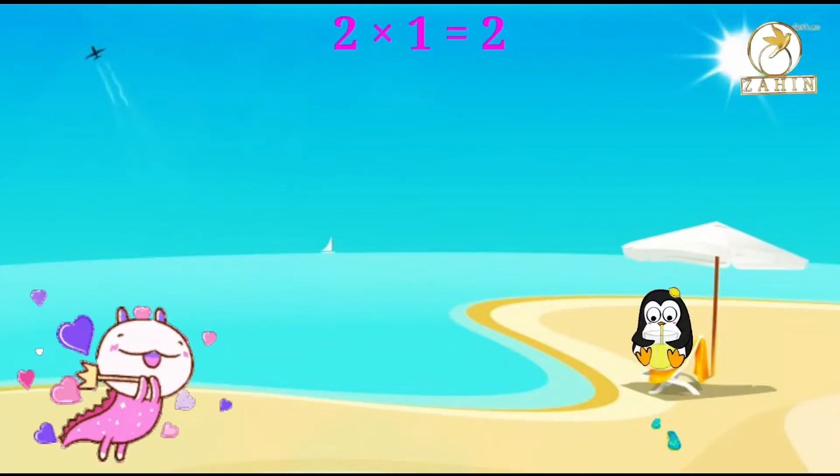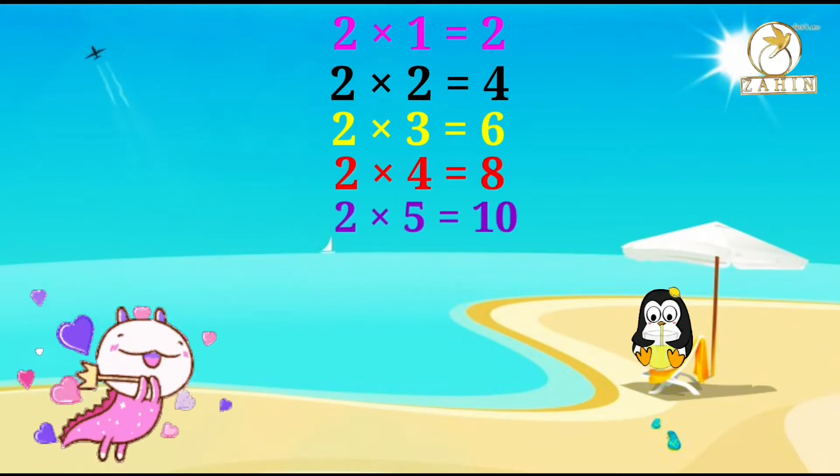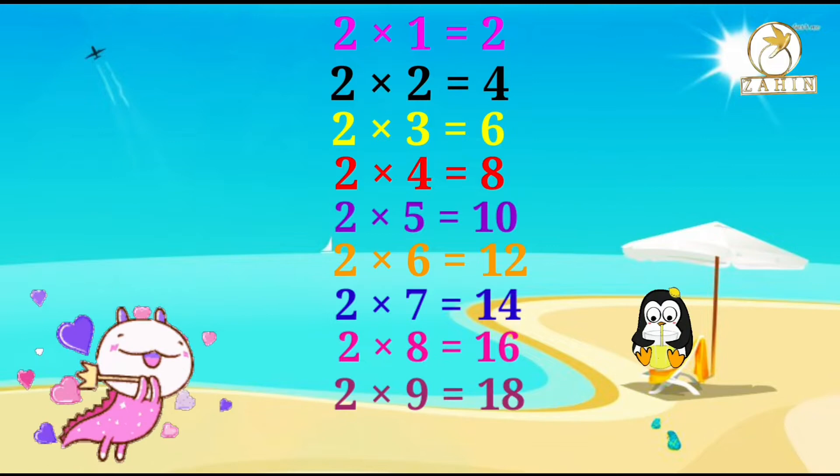2 times 1 equals 2, 2 times 2 equals 4, 2 times 3 equals 6, 2 times 4 equals 8, 2 times 5 equals 10, 2 times 6 equals 12, 2 times 7 equals 14, 2 times 8 equals 16, 2 times 9 equals 18, 2 times 10 equals 20.